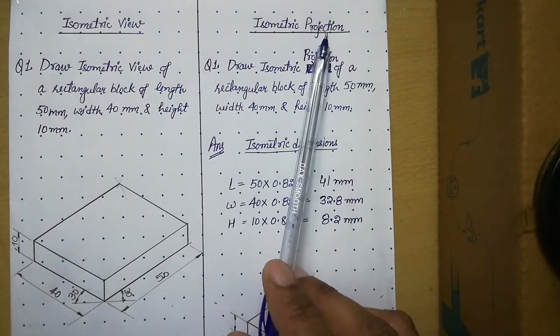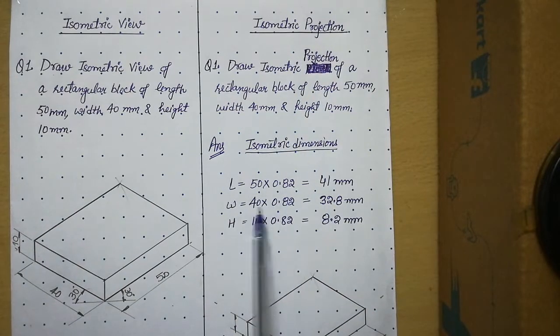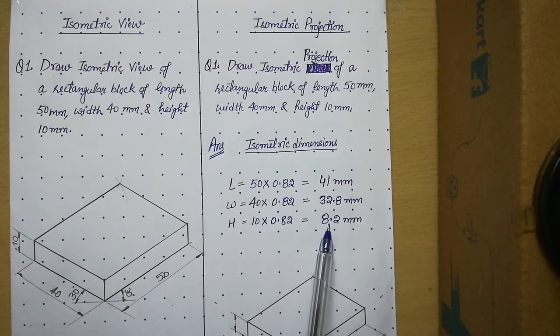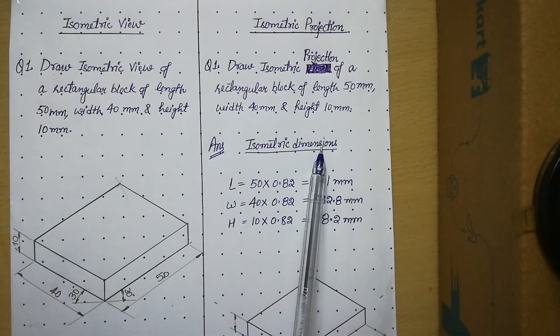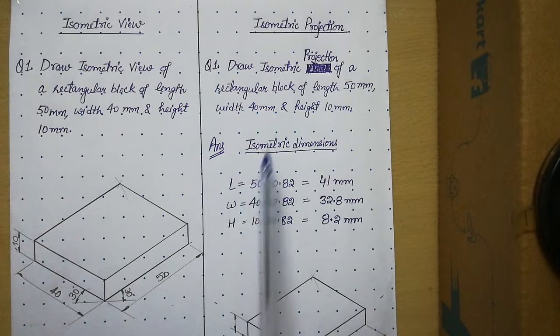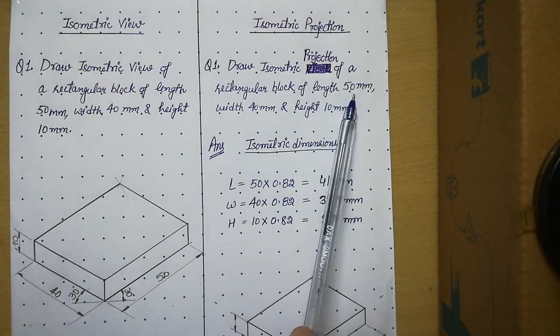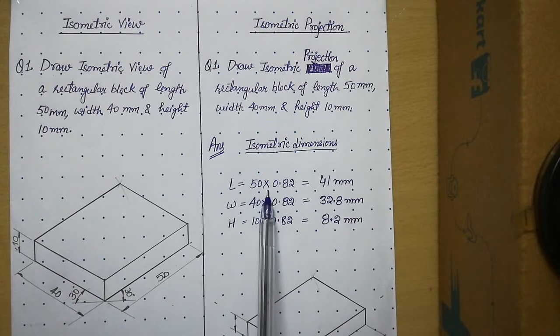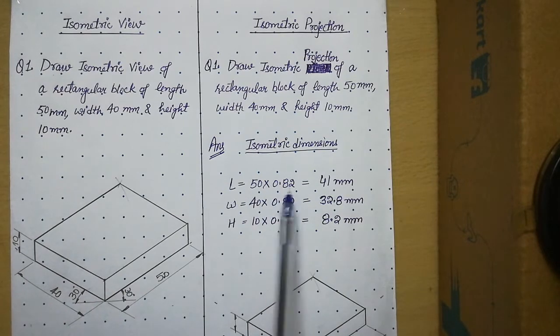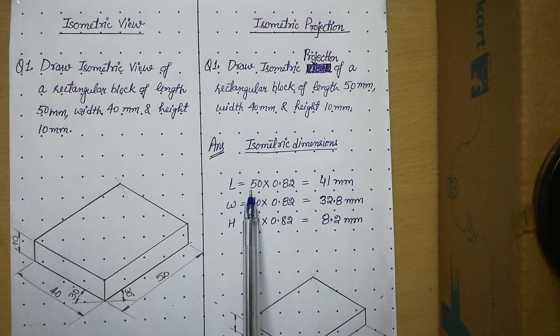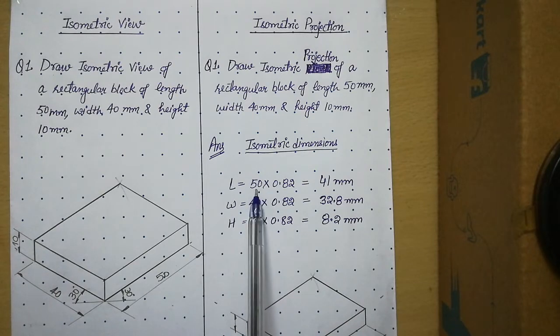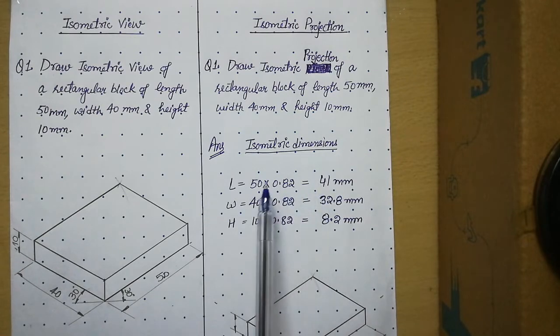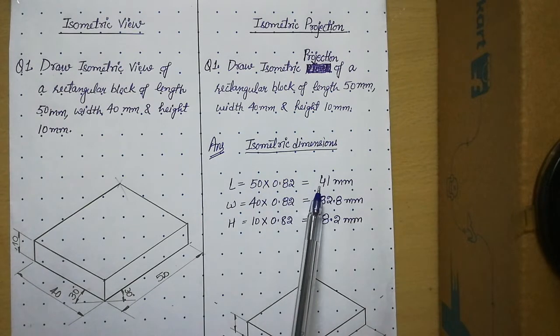But in isometric projection we need to do the calculations first. We call these calculations or these dimensions as isometric dimensions. So first of all what we need to do, whatever length of the solid is given, we have to multiply that length. Over here 50 is given, multiply 50 by 0.82. Means we have to reduce the original length by 18%. So we will get 82% of the actual length. So it is 41 mm over here.